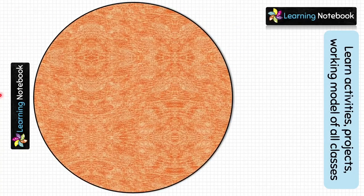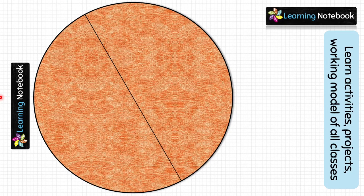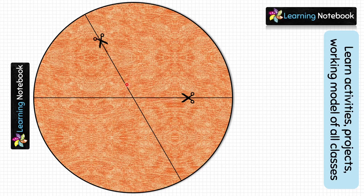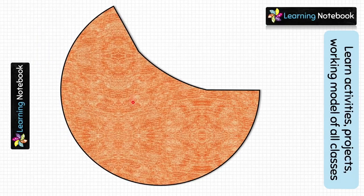Now take the orange circle and cut out a window from it. For this, make an angle of 120 degrees, then cut along the line but not all the way to the center of the circle. After cutting out the window, the orange circle will look like this.